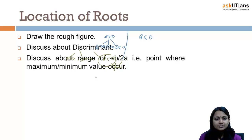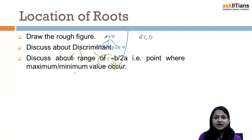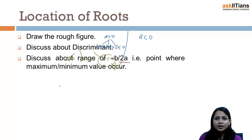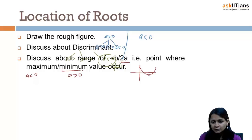The next step is we discuss the range of minus b upon 2a, which is the point where the maximum or minimum value occurs. This point should be clear: minus b upon 2a is where the minimum occurs when a is greater than zero, and the maximum occurs when a is less than zero. We will be talking about its range as per the location of roots.